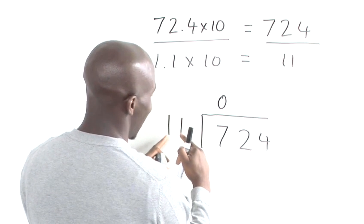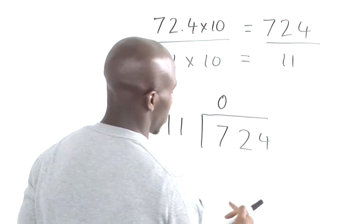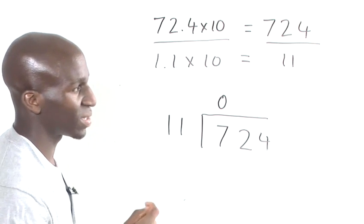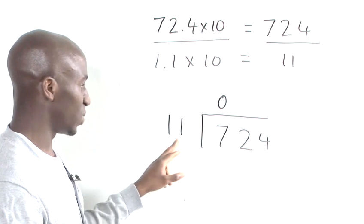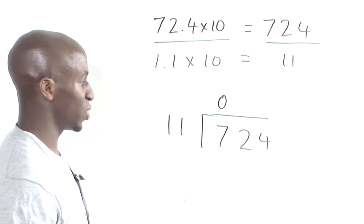So now we need to see how many times 11 goes into 72. So 11 goes into 72, 6 times to give you 66, and then we have a remainder of 6.